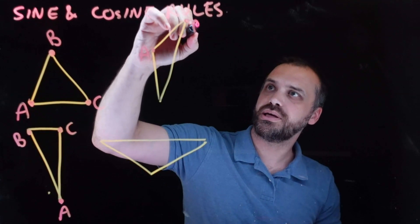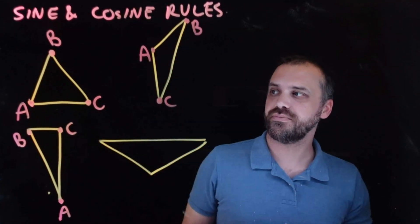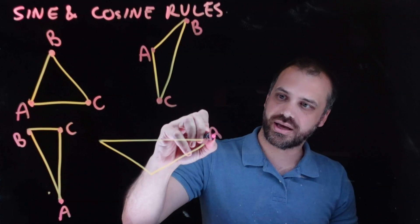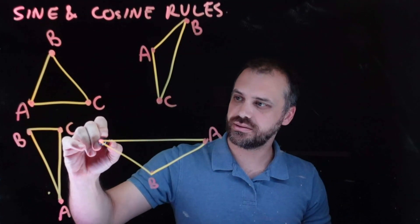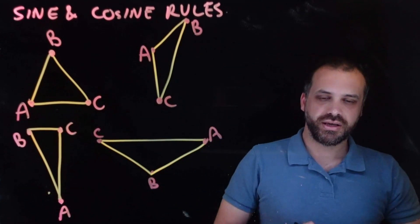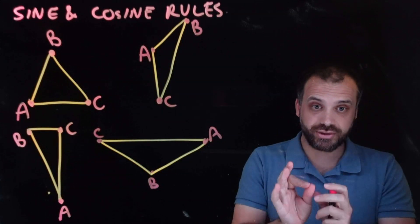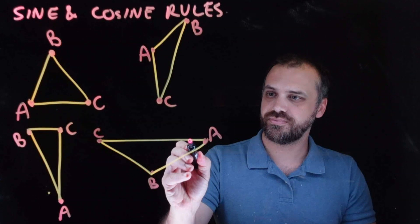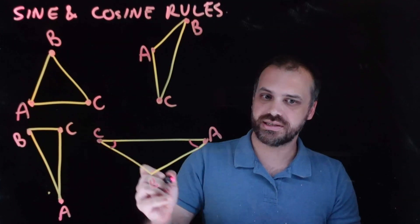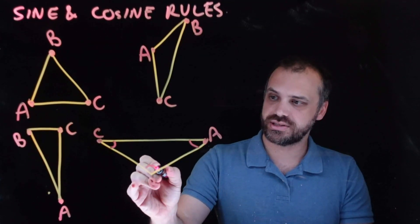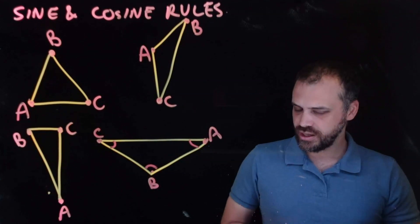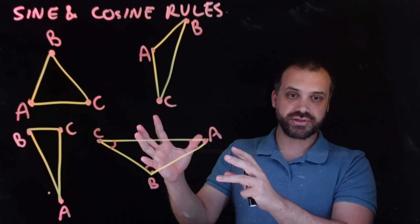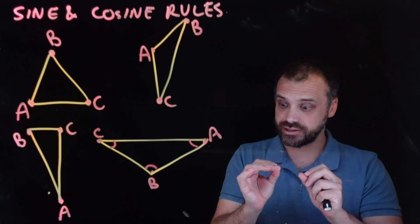A, B, C. All right, so that's how we label up our angles. So we might say that this is angle A. We would say that this is angle C. And this is angle B. Okay, you get the basic idea here with the angles. A, B, C, capital letters.